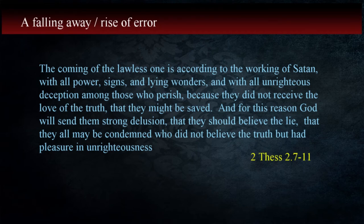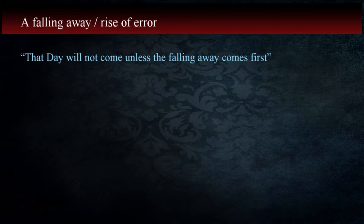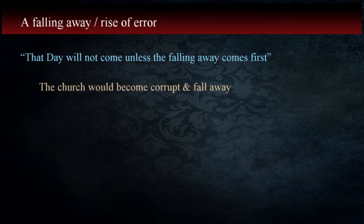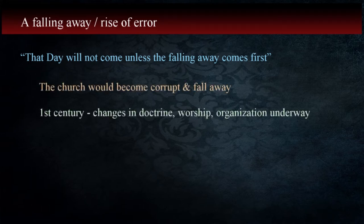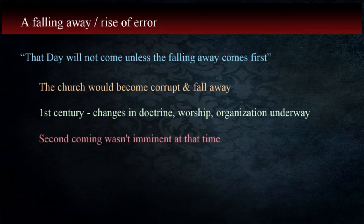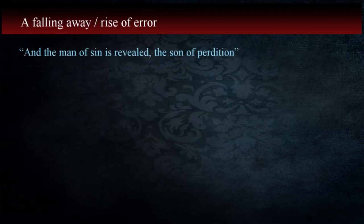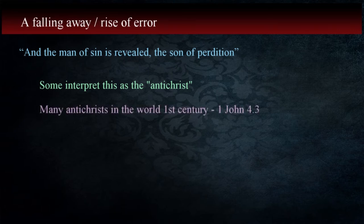Let's break this down and look at the elements Paul is talking about. That day will not come unless the falling away comes first. Christ wouldn't return before corruption in the church reached a point that it had fallen away. Changes in doctrine, worship, and organization of the church were already underway by the end of the 1st and early 2nd century. The Thessalonians could rest assured that they weren't faced with the imminent return of the Lord at that time. And the man of sin is revealed, the son of perdition. Some interpret this as the Antichrist.